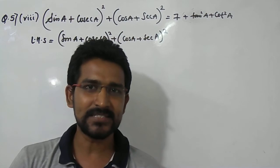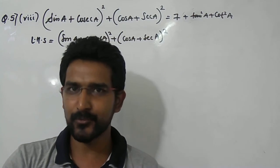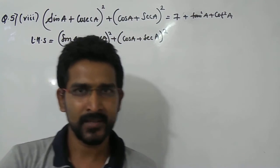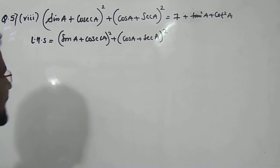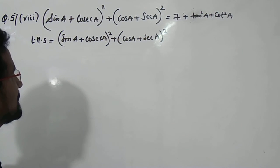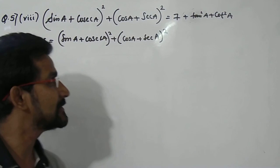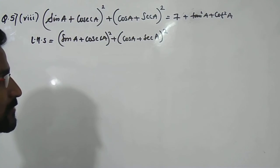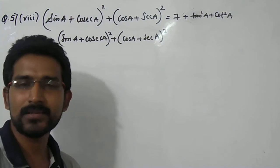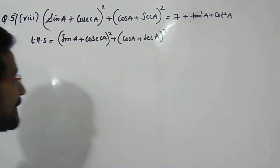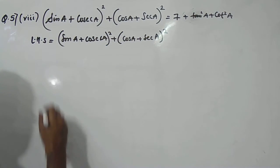Hello, so today in this session we are going to see sub-question 8 of question number 5. In this we have to prove an identity that (sin a + cosec a)² + (cos a + sec a)² equals 7 + tan²a + cot²a. So we will take the LHS first and we will try to simplify it.